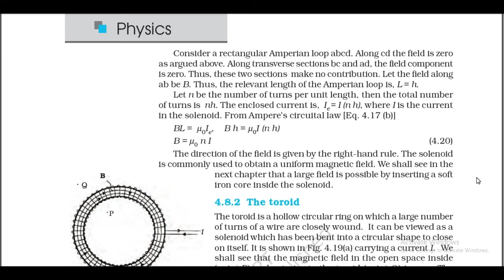Consider a rectangular Amperian loop abcd. Along cd, the field is zero. Along transverse sections bc and ad, the field component is zero, so these sections make no contribution. Let the field along ab be B; the relevant length of the Amperian loop is l = h. Let n be the number of turns per unit length; then the total number of turns is nh and enclosed current i_e = inh. From Ampere's circuital law: Bl = μ₀i_e → Bh = μ₀inh → B = μ₀ni. The direction of the field is given by the right-hand rule. The solenoid is commonly used to obtain a uniform magnetic field; a large field is possible by inserting a soft iron core inside.